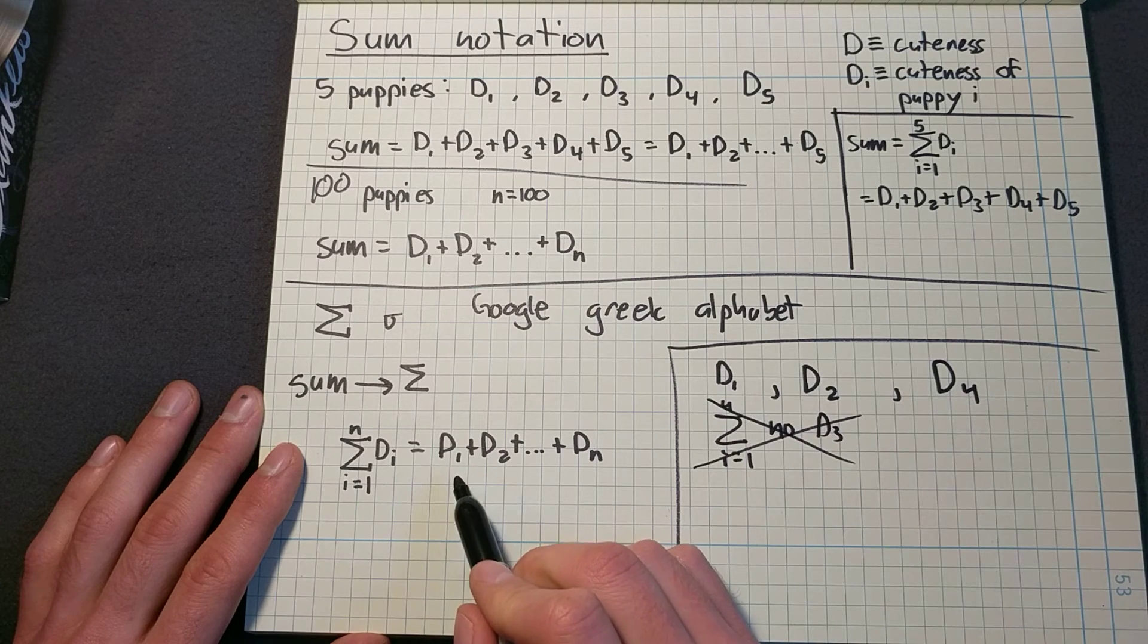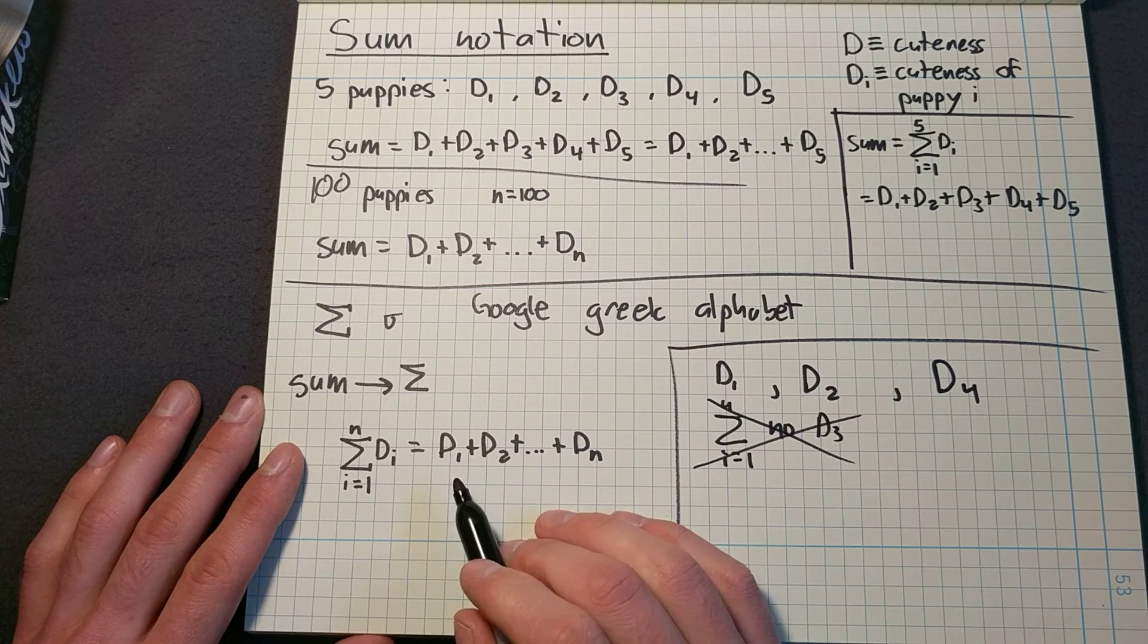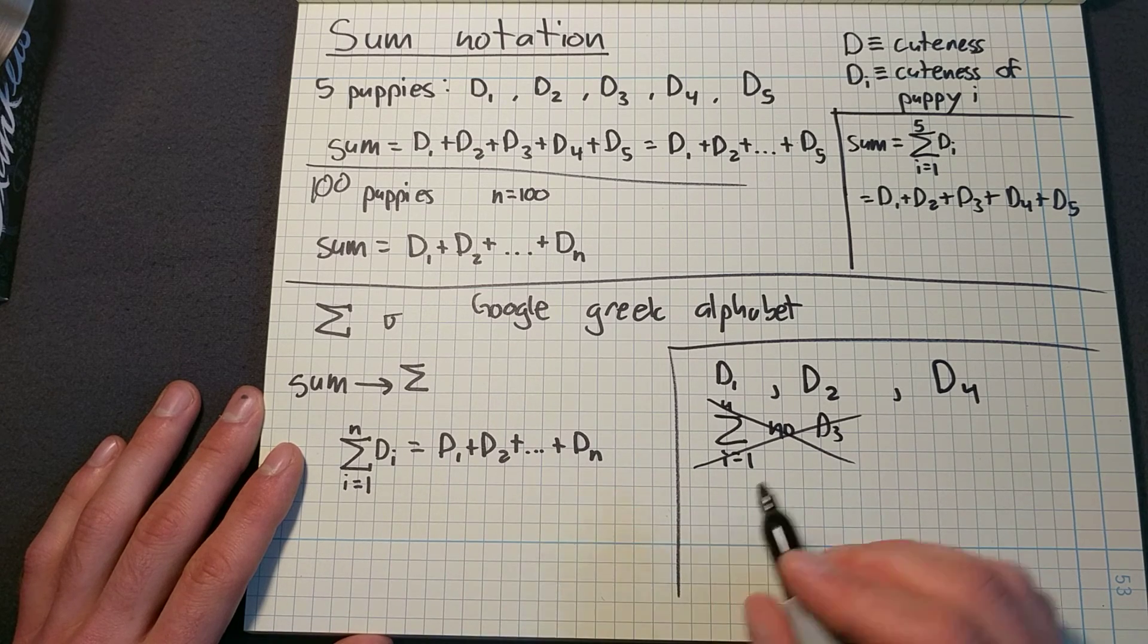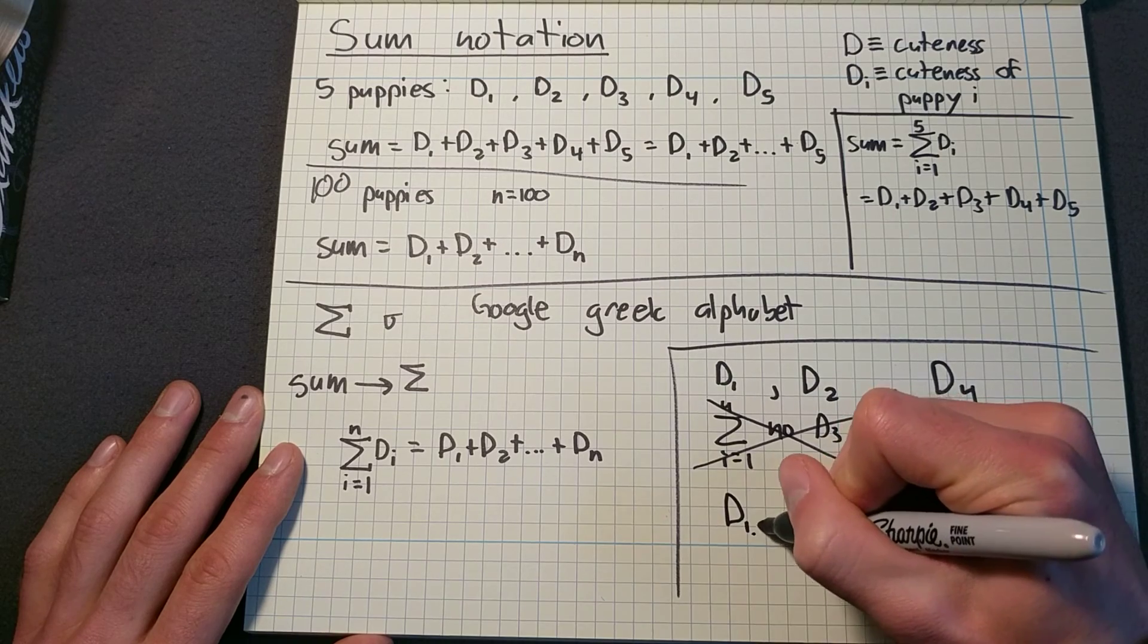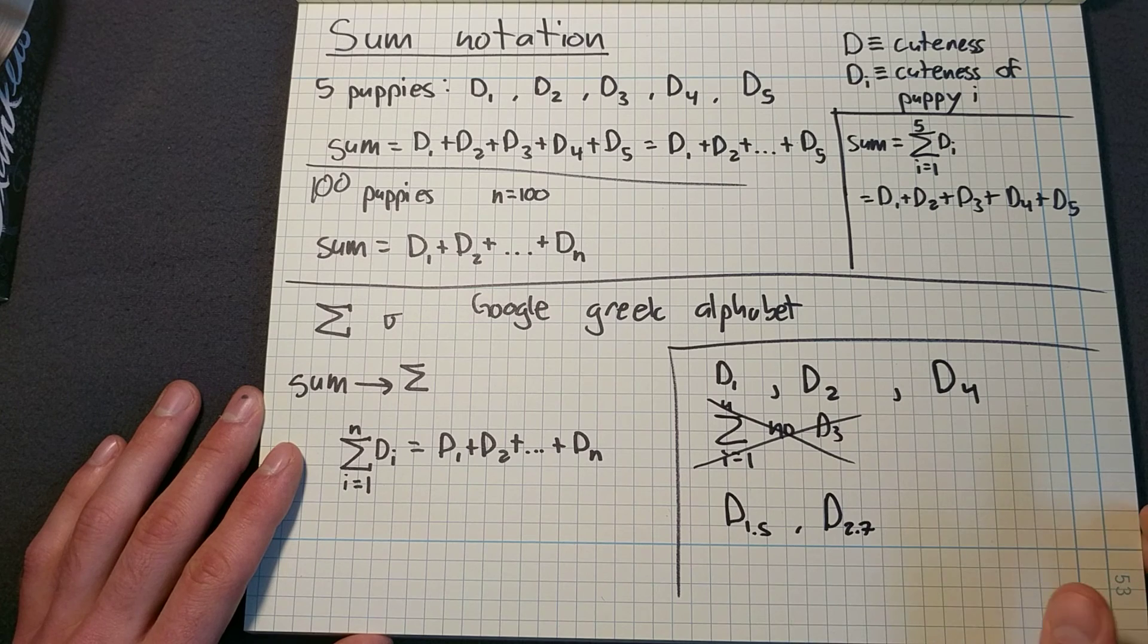And these also must always be integers. I can't have point fives. I guess I could have negative numbers, but always integers. If I had D one point five, D two point seven, then sum notation is not going to work.